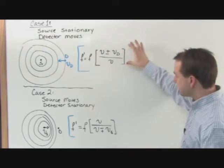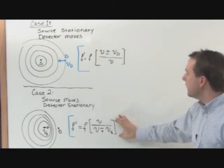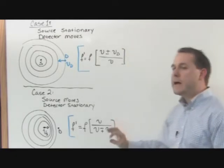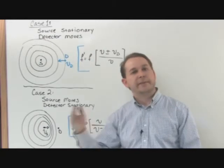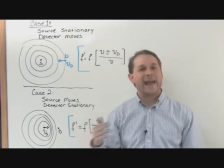In other words, in this case, the detector was the only thing moving. In this case, the source was the only thing moving. There is a Doppler shift equation that takes both into account with the source and the detector moving.